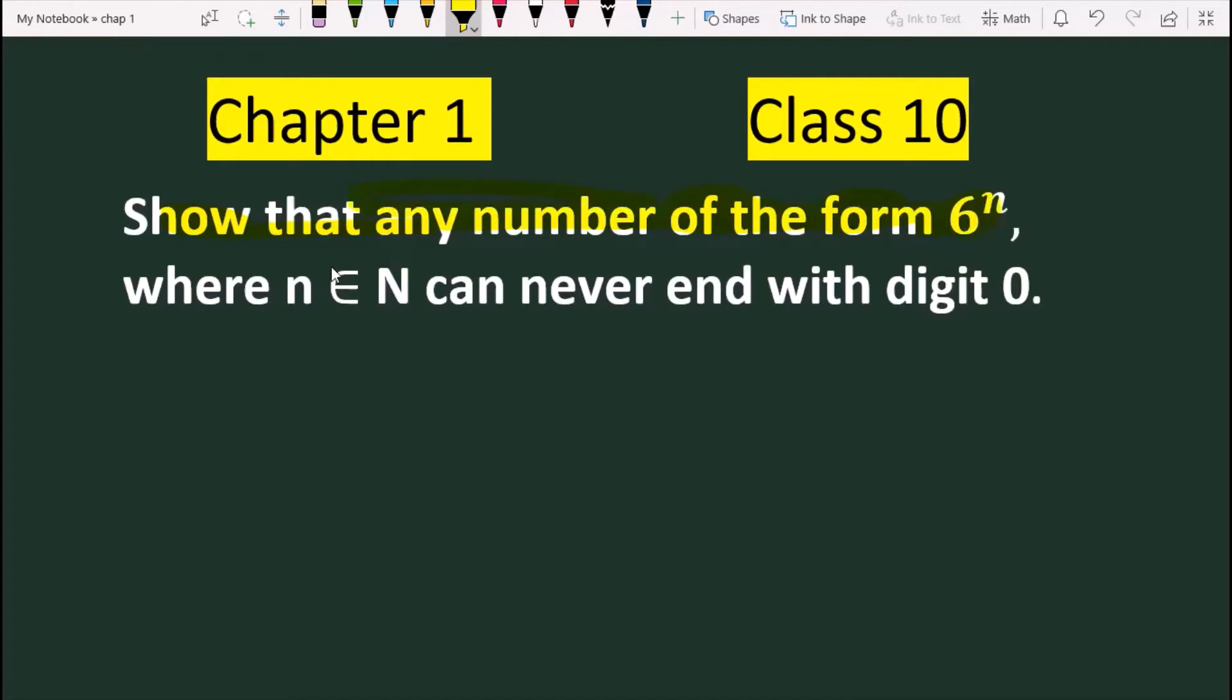Where n belongs to N. This means that the small n belongs to the natural numbers. The power n belongs to the natural numbers, meaning the power n is 1, 2, 3, and so on, the power n is going to change.